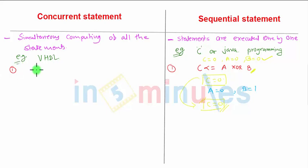C will be equal to C is assigned as A XOR with B. As soon as A or B changes, that is nothing but the sensitivity list. So what is sensitivity list you will come to know.